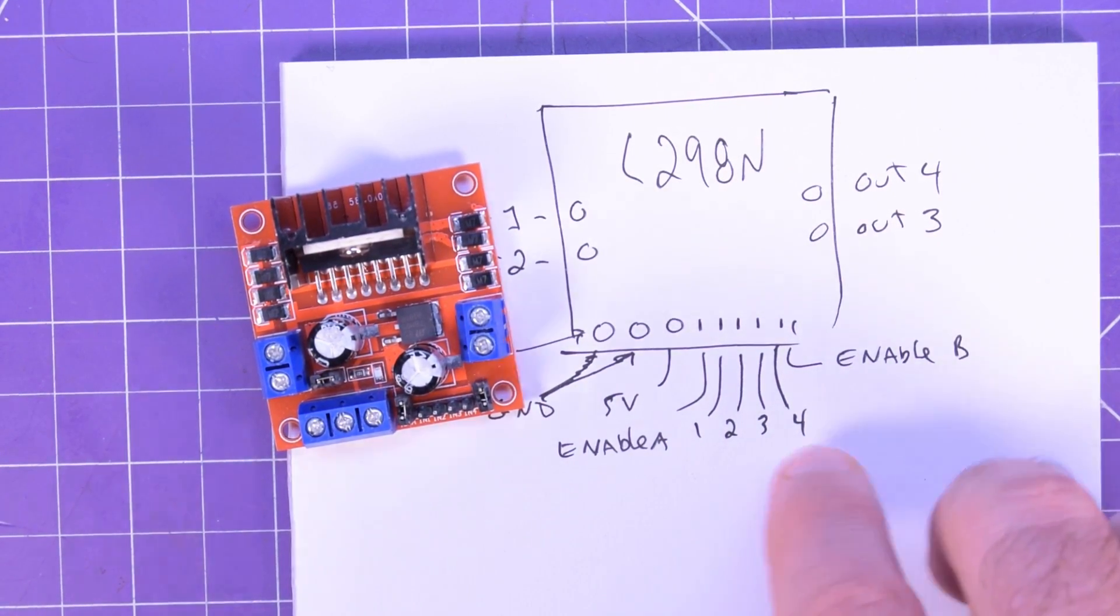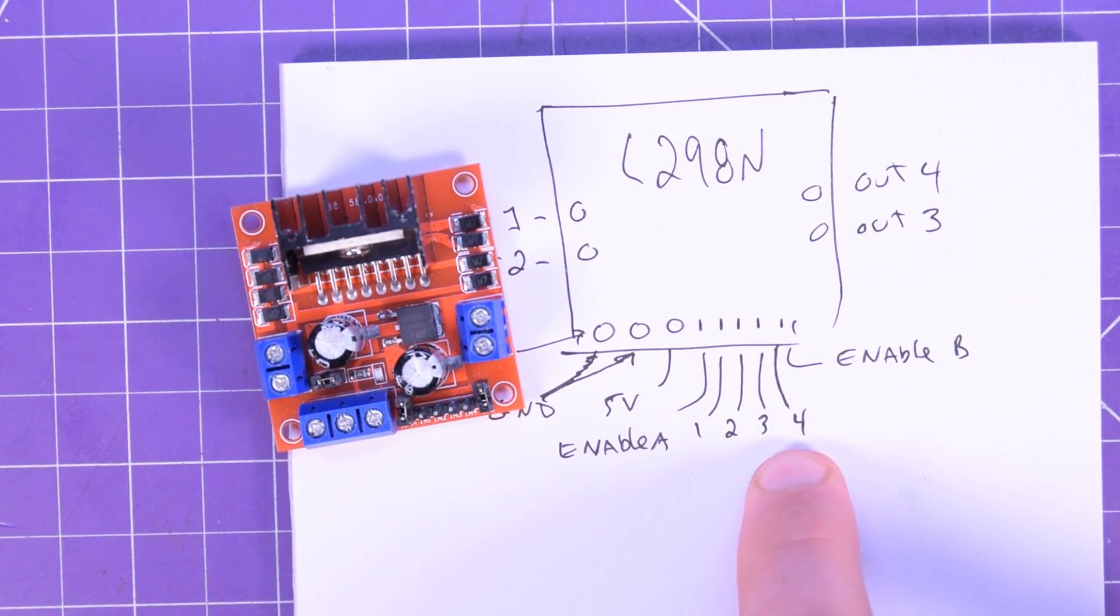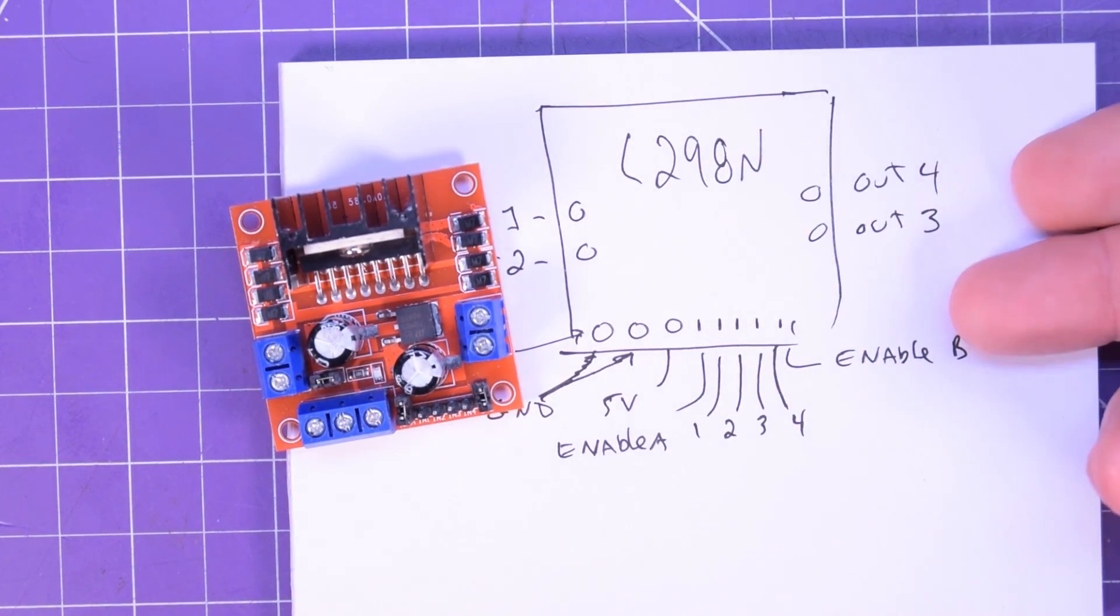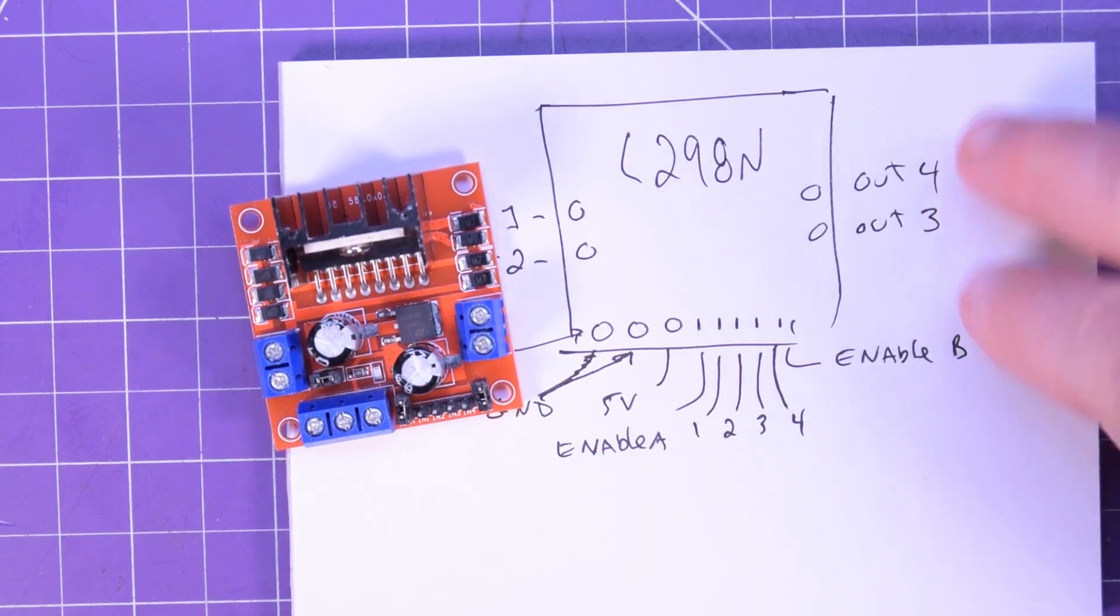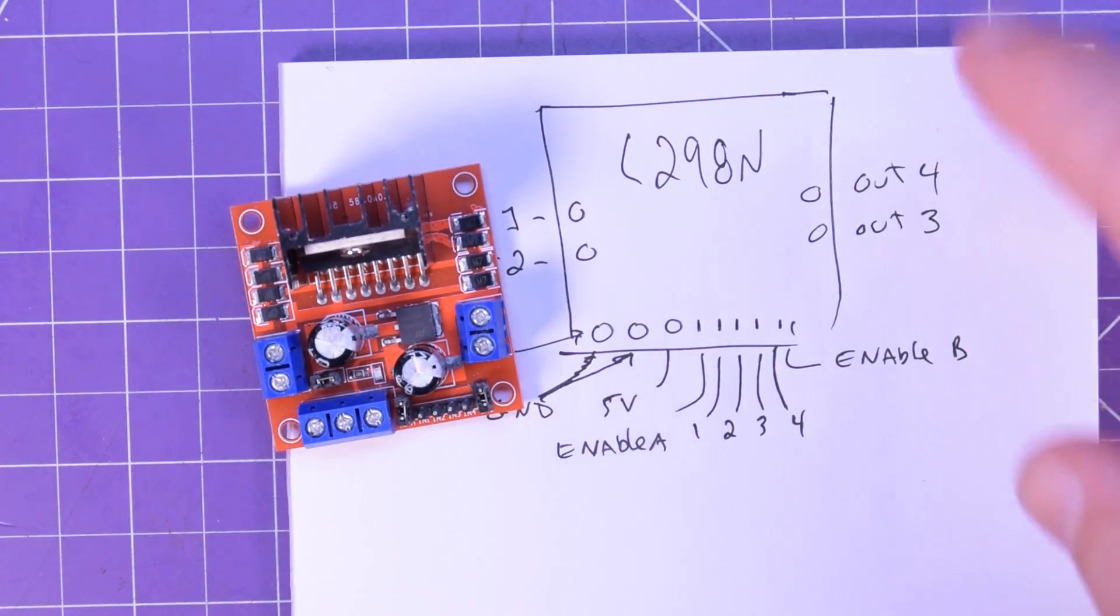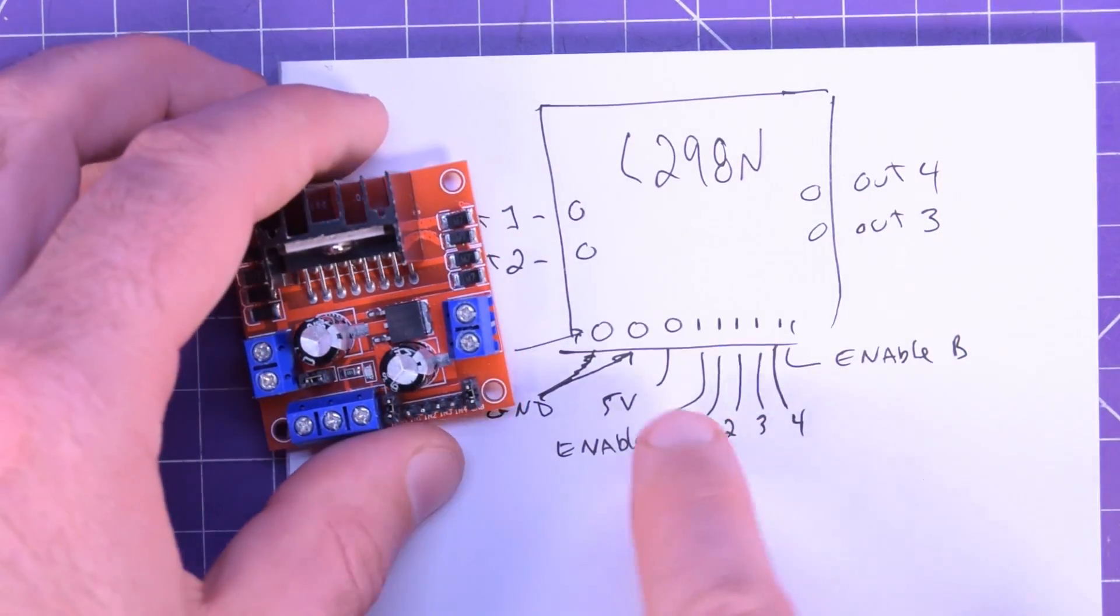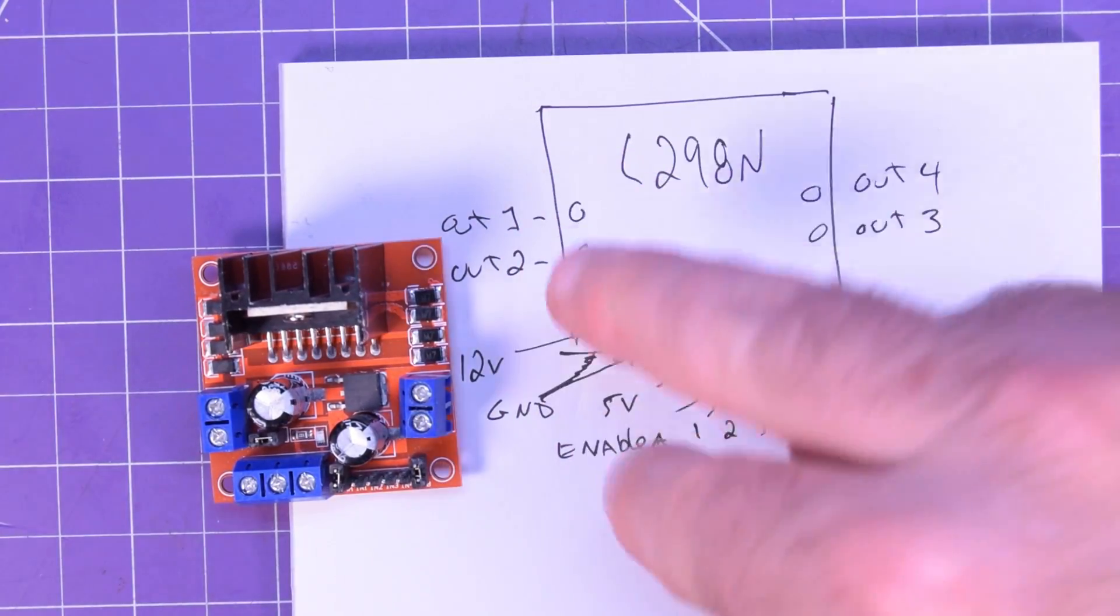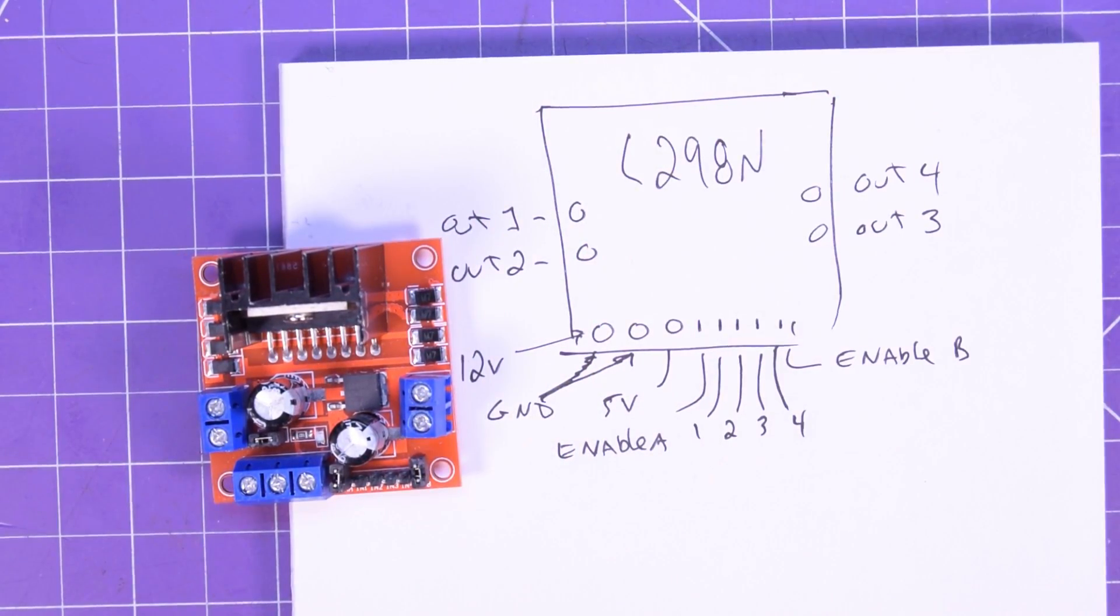Now what inputs 1, 2, 3, and 4 does is 3 and 4 will enable the outputs on output 3 and 4 and it'll switch which one is positive and which one is negative in the full H-bridge driver. Same thing with 1 and 2. That'll work that side. It'll flip which one's available on the full bridge driver.